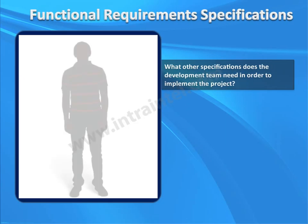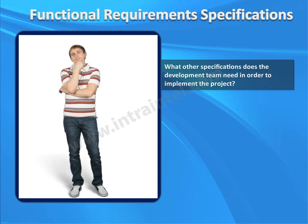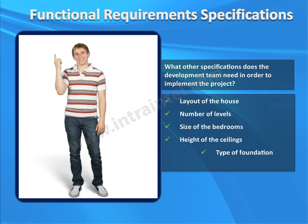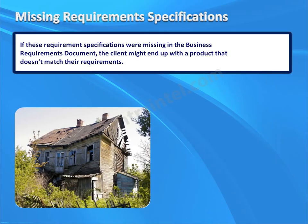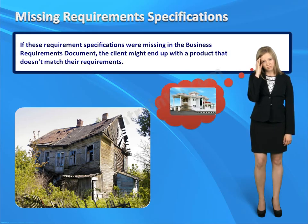What other specifications does your development team need in order to implement this project? Wouldn't they need to know the exact layout of the house, the number of levels, the size of the bedrooms, the height of the ceilings, the type of foundation needed? What about the flooring — do you want real hardwood floors, or would a laminate be okay? If these requirement specifications were missing in the business requirements document, the client might end up with a product — in this case a house — that doesn't quite match their requirements.